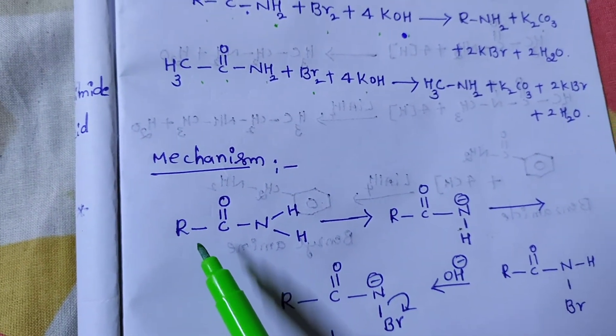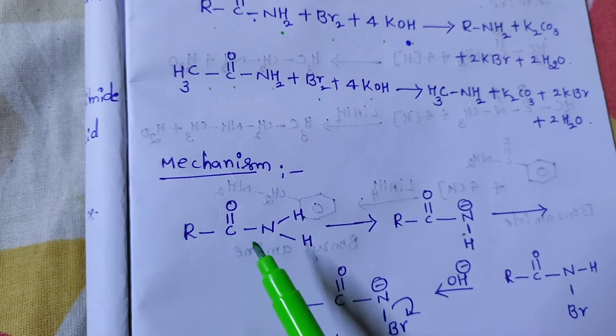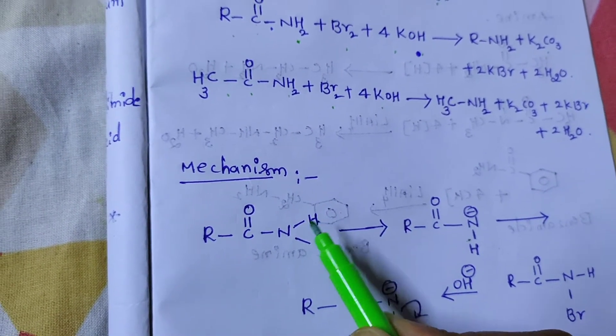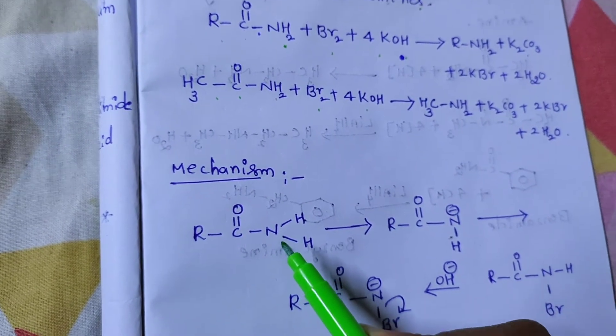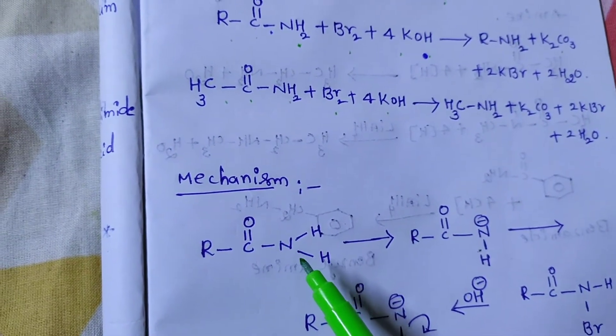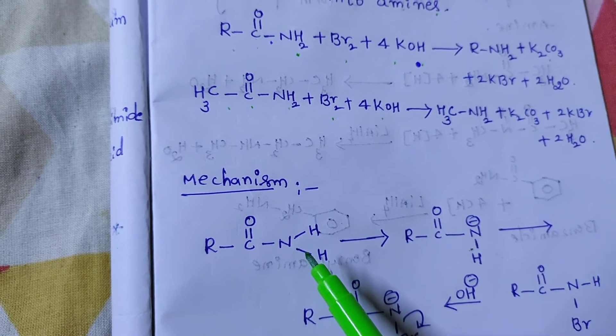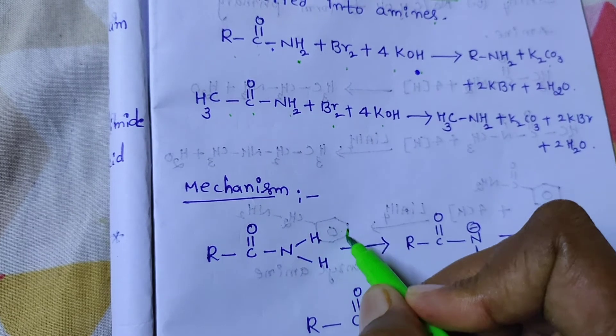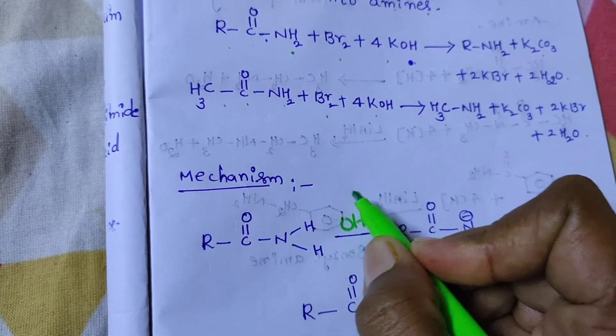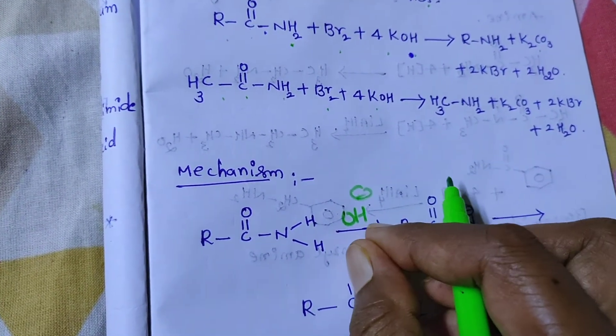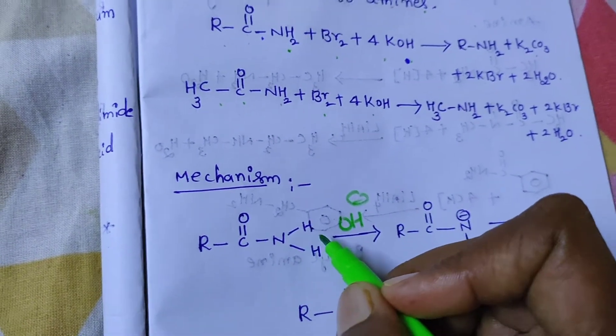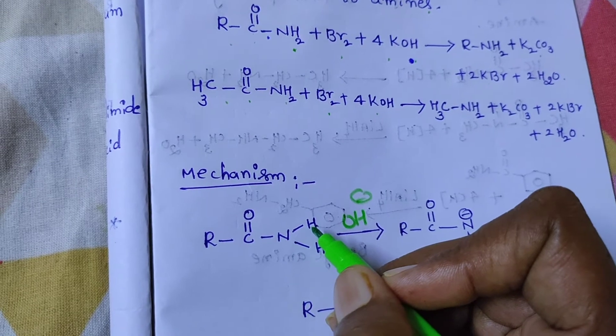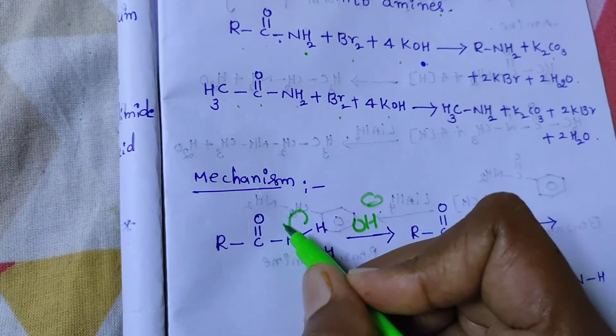This is the amide, R-C double bond O-NH2. Here, hydrogen is attached to the nitrogen, relatively acidic. So, we are going to start with the hydroxide, KOH, OH minus. This hydroxide ion removes this hydrogen and the nitrogen-hydrogen bond breaks. These electrons come to the nitrogen.